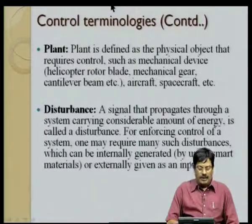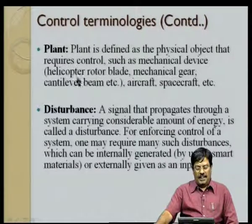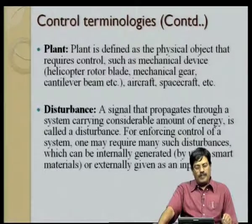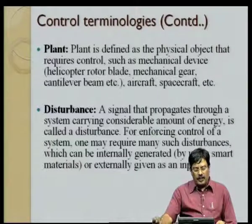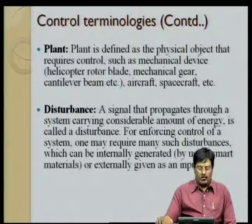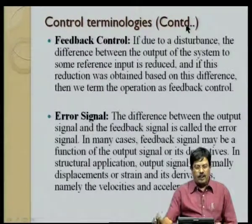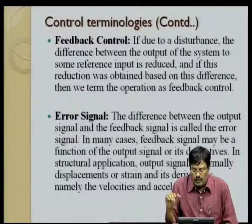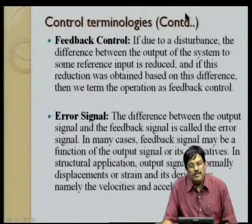A plant is defined as a physical object that requires control, such as a mechanical device, helicopter blade, mechanical gear, cantilever beam, aircraft, or spacecraft. A disturbance is a signal that propagates through a system carrying considerable energy. Feedback control is when the difference between the output and a reference input is reduced based on that difference. The error signal is the difference between the output signal and the feedback signal, which may be a function of the output and its derivatives.